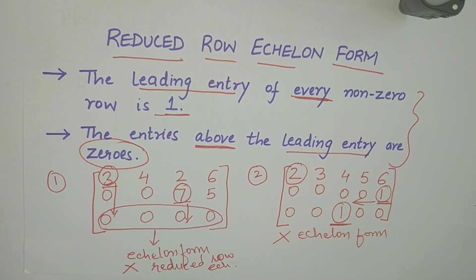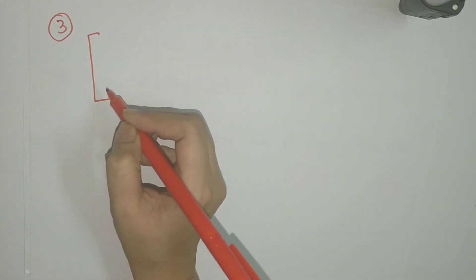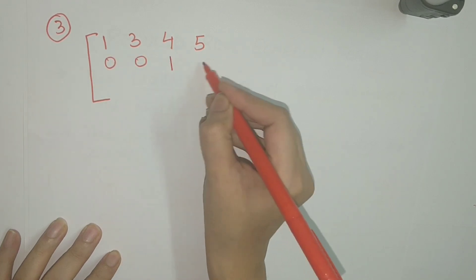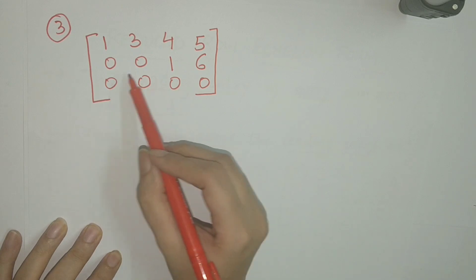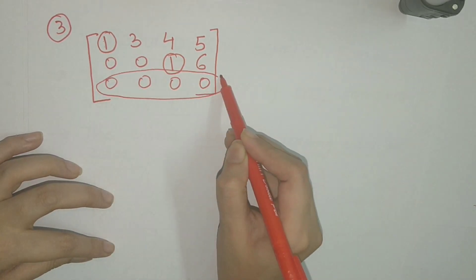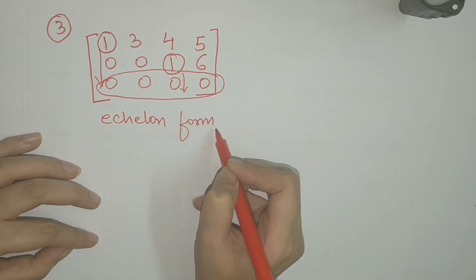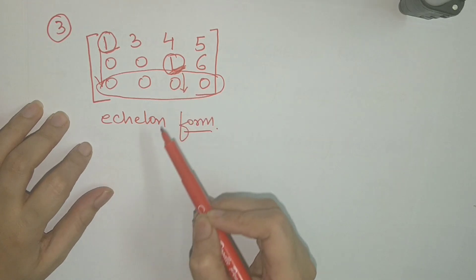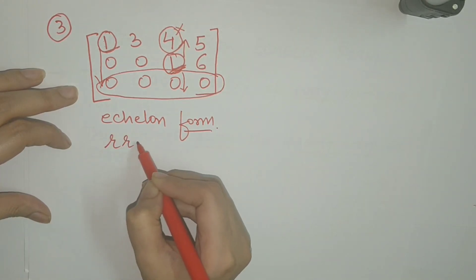Let us take some more examples. Consider the matrix [[1,3,4,5],[0,0,1,6],[0,0,0,0]]. Here the leading entries of each non-zero row are 1 and 1. The row of all zeros is at the bottom, and the entries below the leading entries are 0, so this matrix is in echelon form. Let us see if it is in reduced row echelon form. Since the leading entries are 1, that condition is satisfied. However, the entry above the leading entry of the second row is not 0, so it is not in reduced row echelon form.